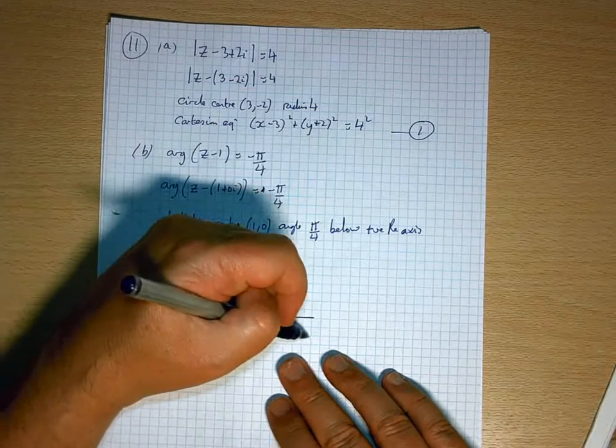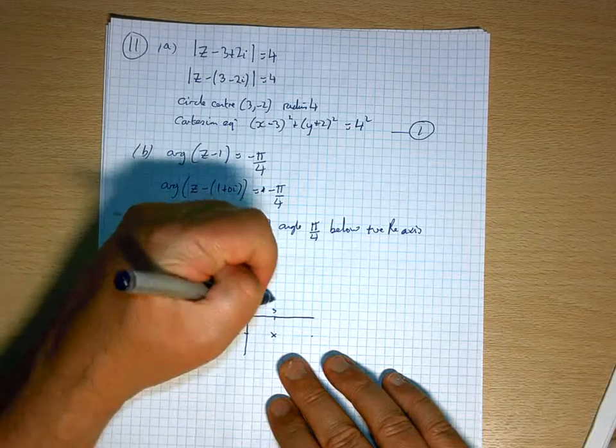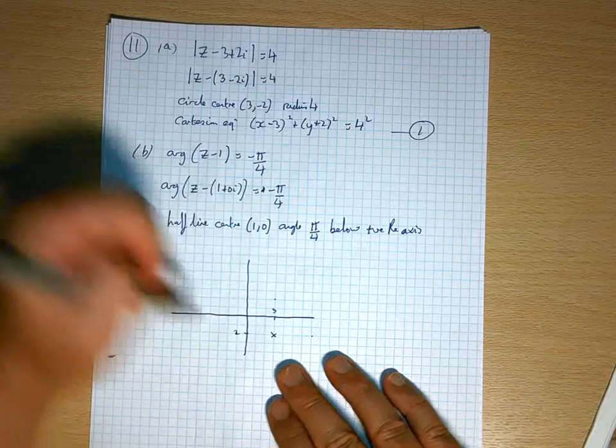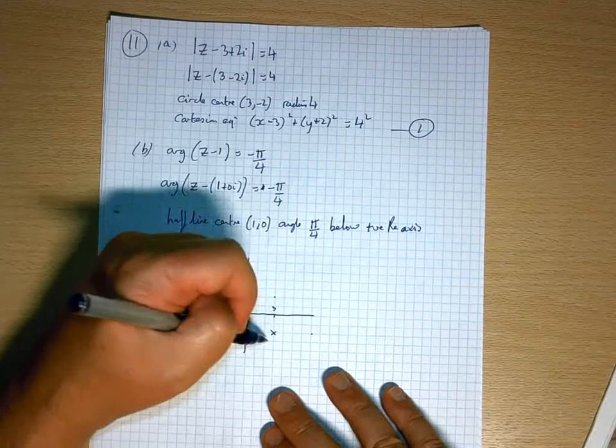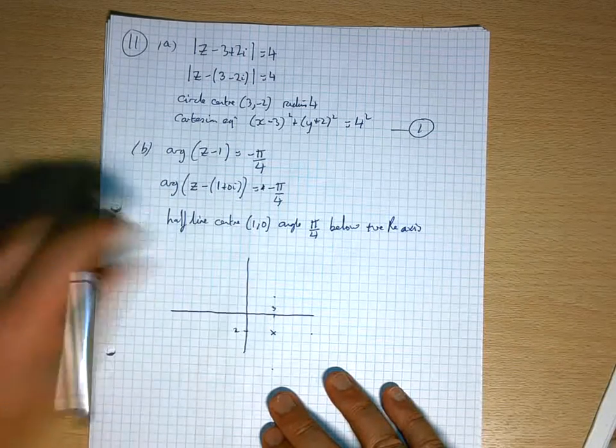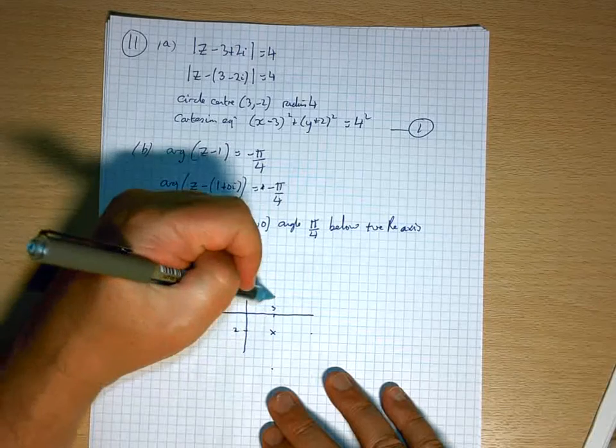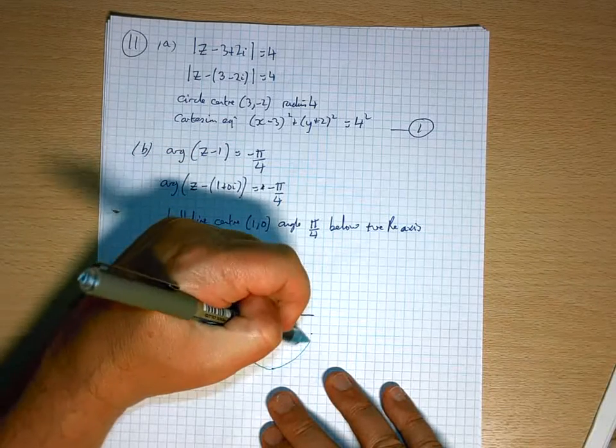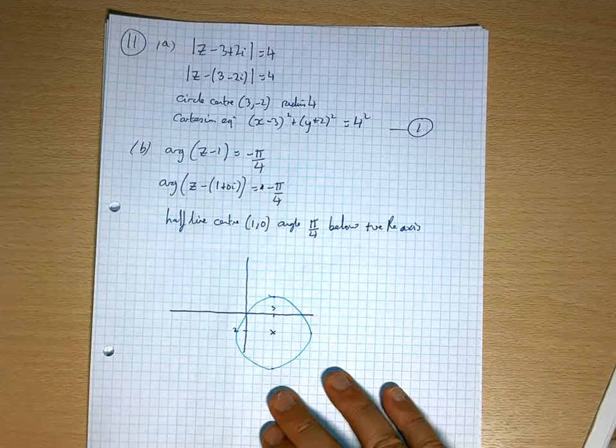So that's going to take me 1, 2, 3, 4 that way, 2 that way, 1, 2, 3, 4 that way, 1, 2, 3, 4 that way, so my circle is going to do that kind of thing. Perfect.